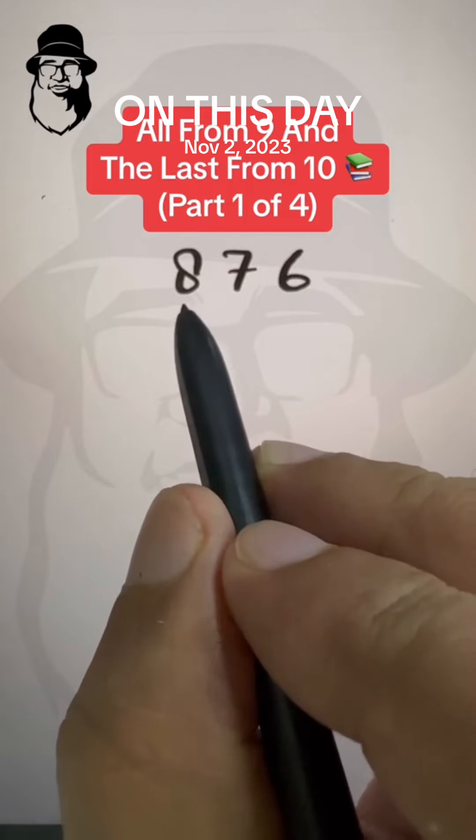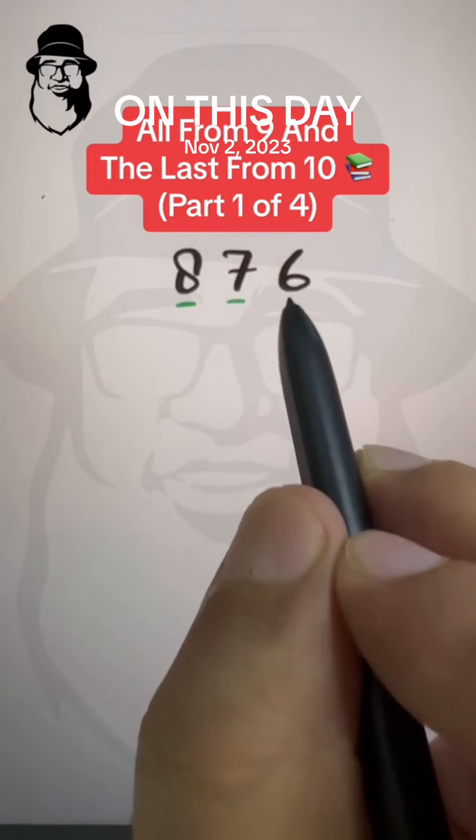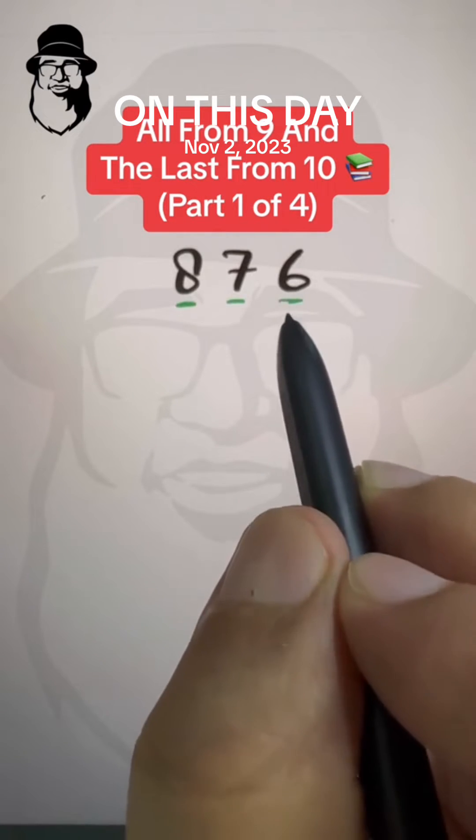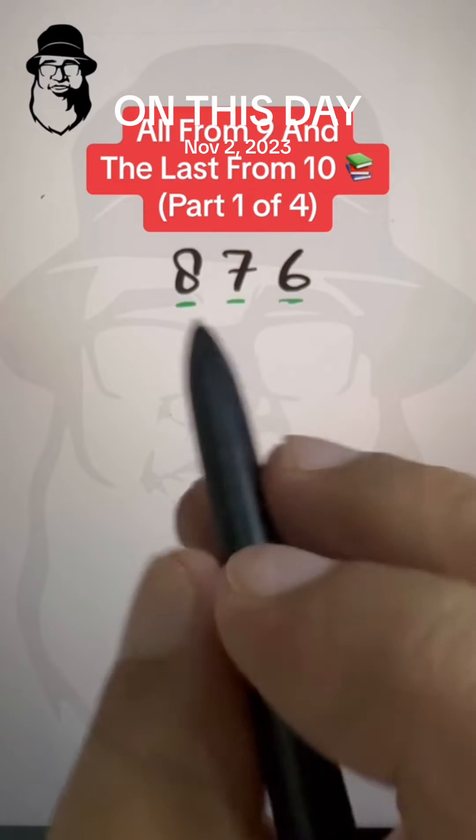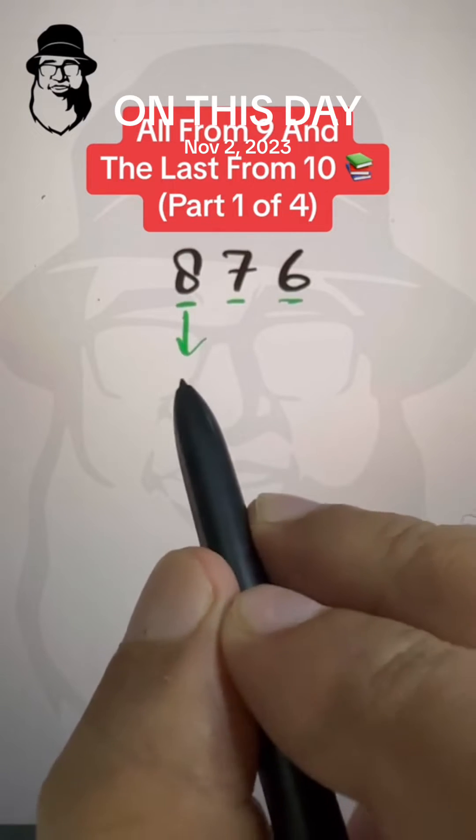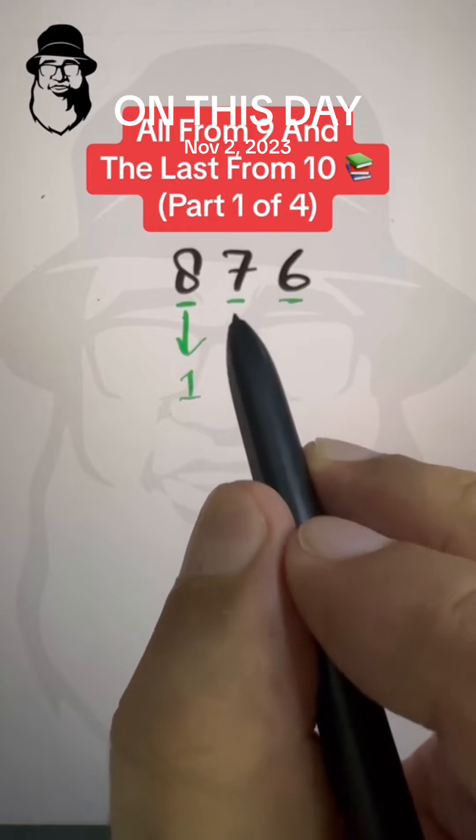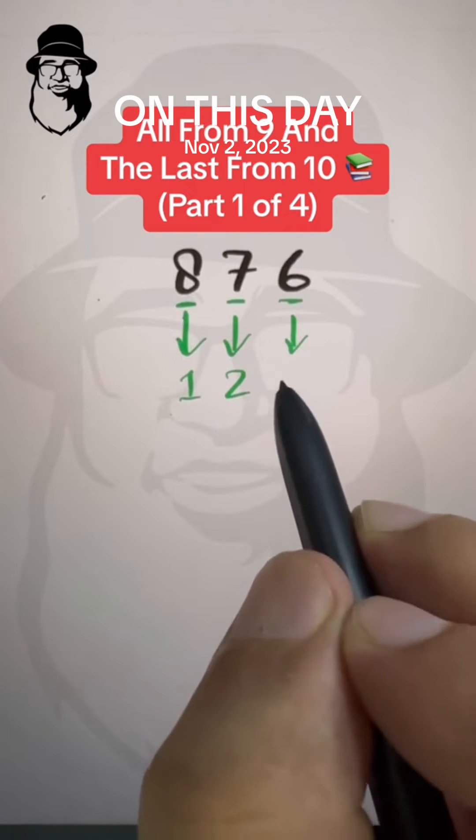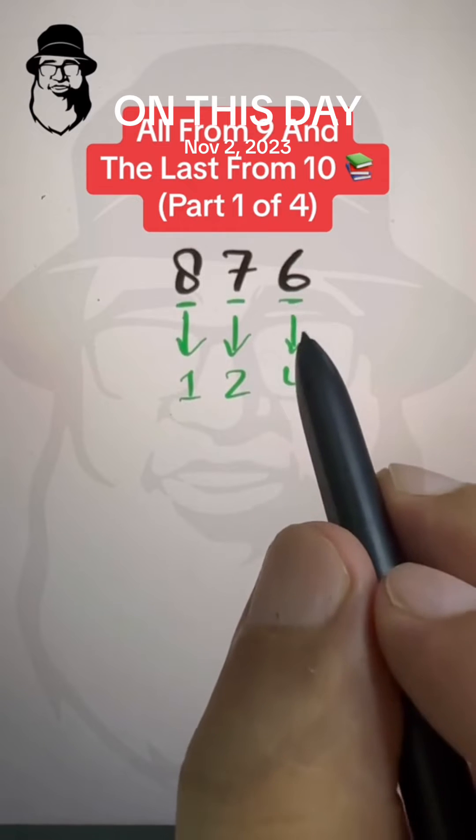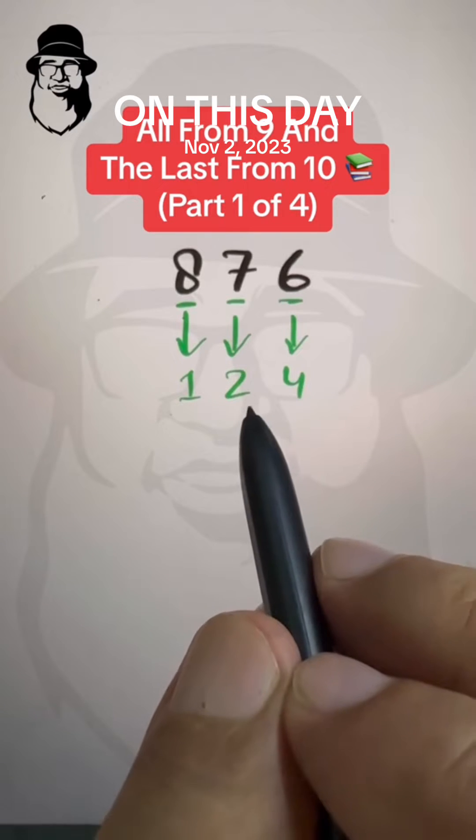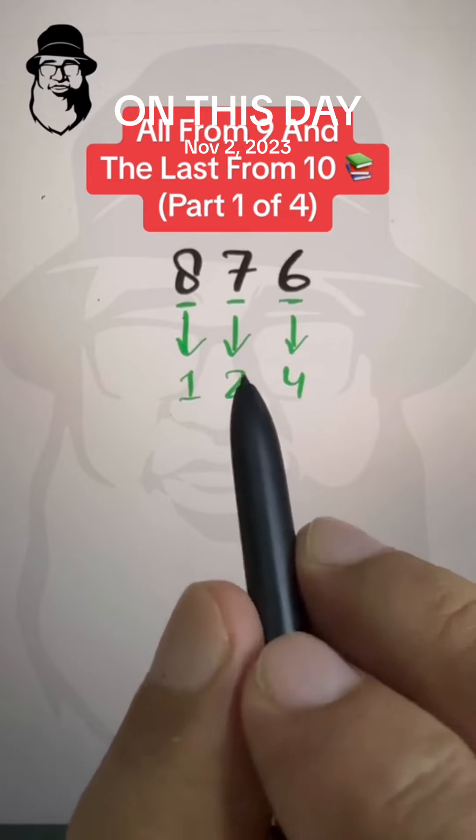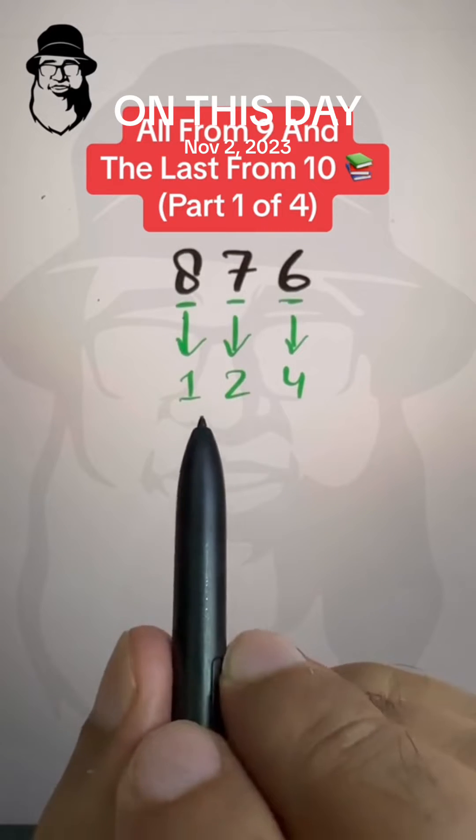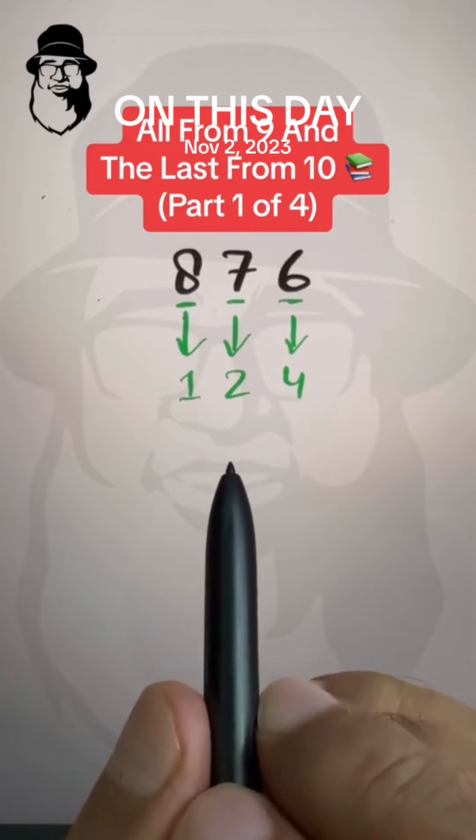So this means this from 9, this from 9, and the last digit from 10. Let's apply on 876. 8 from 9 is 1, 7 from 9 is 2, and 6 from 10 is 4. Remember the last one from 10. If we apply this formula, all from 9 and the last from 10 on 876, our answer will be 124.